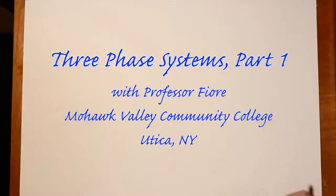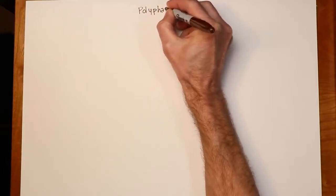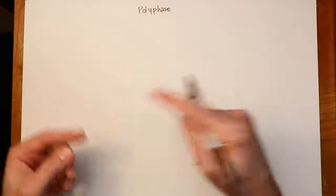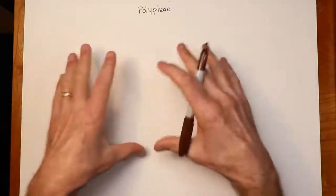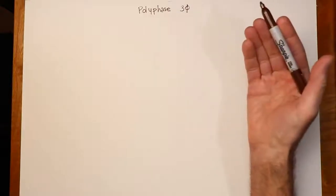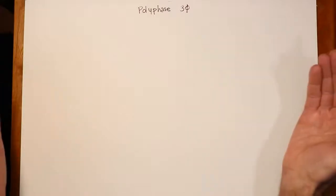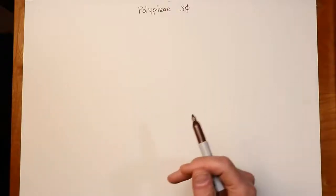Welcome to polyphase systems. We're going to begin talking about three-phase systems, covered in chapter 9 of the AC Electrical Circuit Analysis text. Polyphase basically means we have more than one phase — more than one source to drive a load, and the load itself consists of several individual phases or parts. We use the Greek letter phi to indicate phase. Three phases is clearly the most widely used for reasons of efficiency, although technically you could use two-phase or five-phase.